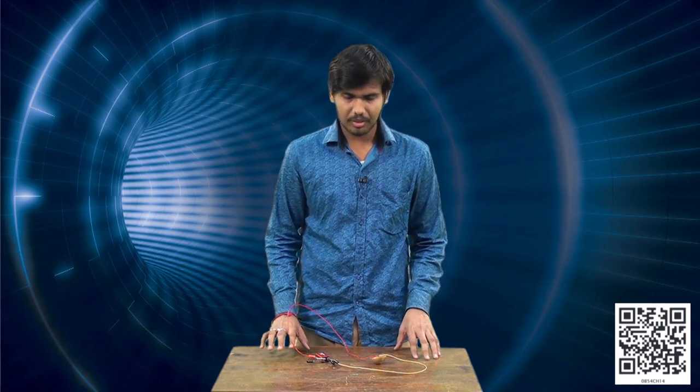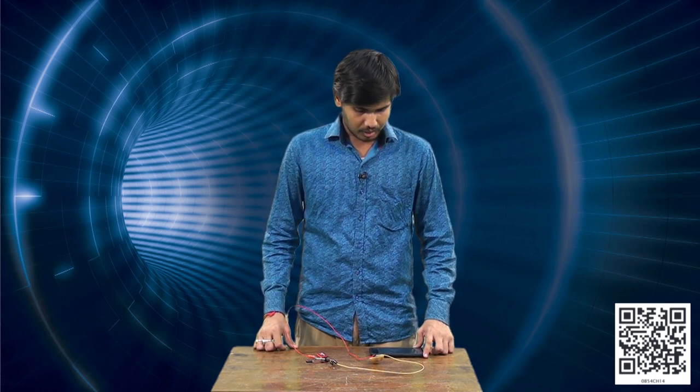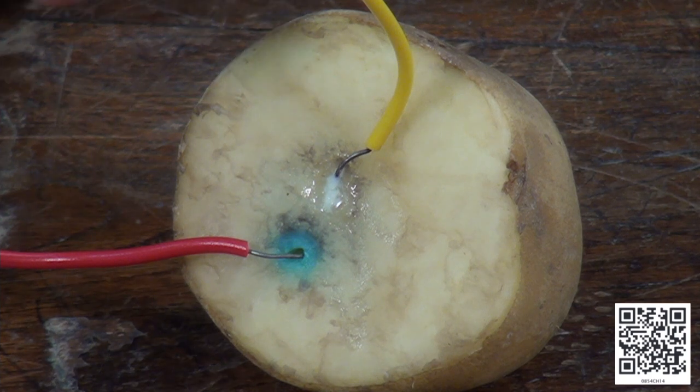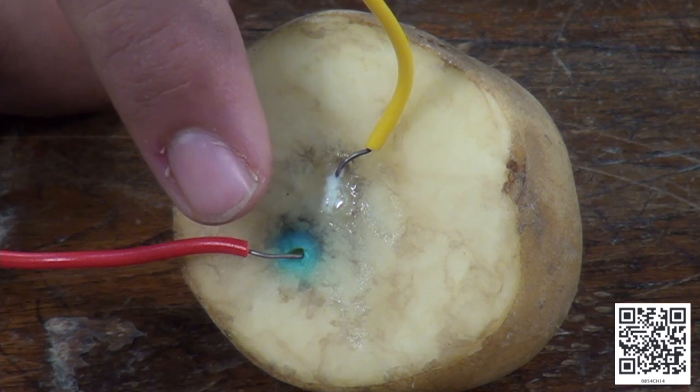Now we will be leaving this setup for a few amount of time. After a few minutes you can observe greenish blue color in potato around the wire where the positive terminal is connected.